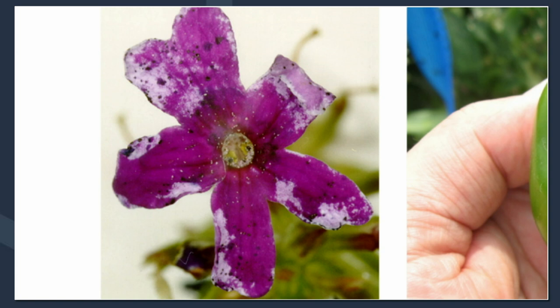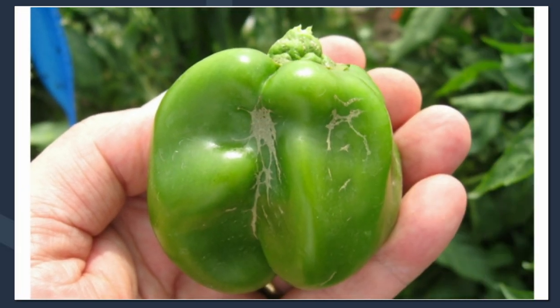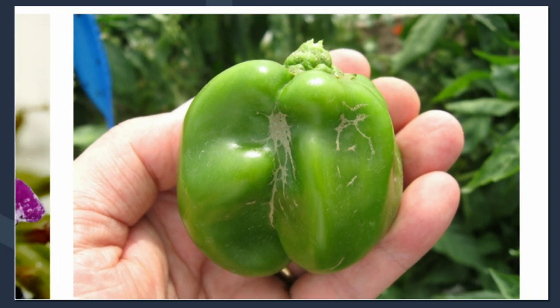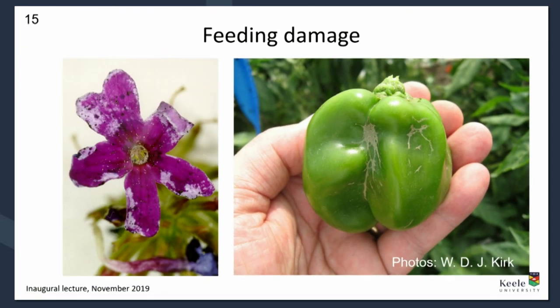Here's an example of damage to fruit and vegetables. When the fruit is small, thrips feed on it causing scarring, and as the fruit grows — in this case a sweet pepper — you can see the scarring from feeding but also stunting and deformation. You can't sell those in supermarkets because they don't look right. They probably taste just as good, but they'd have to go for other purposes like soups rather than being sold at a high price as an attractive vegetable.